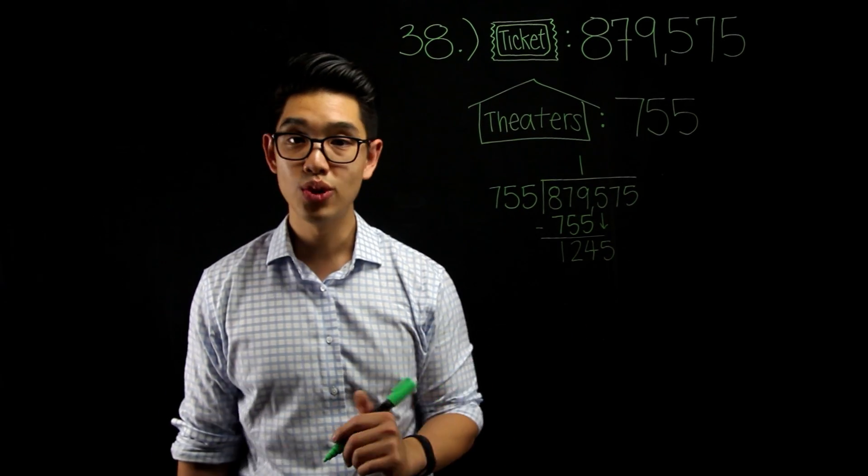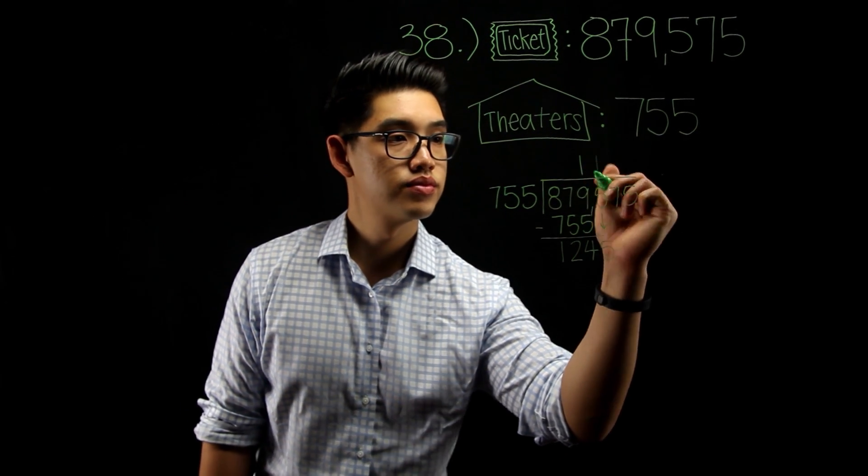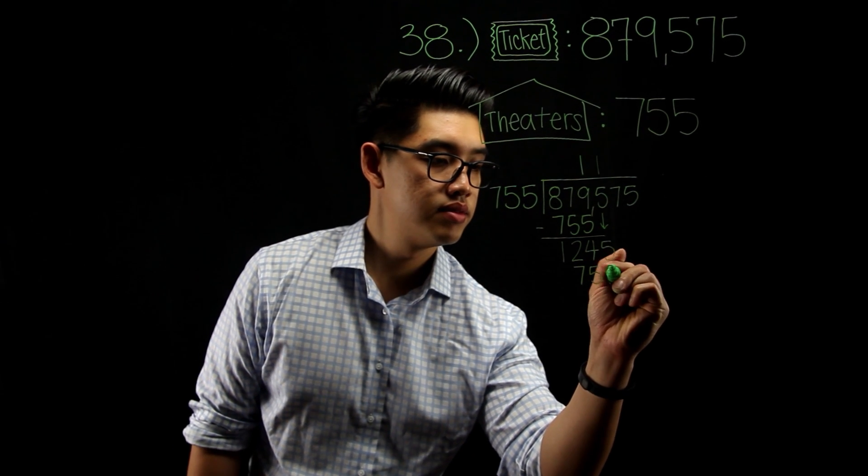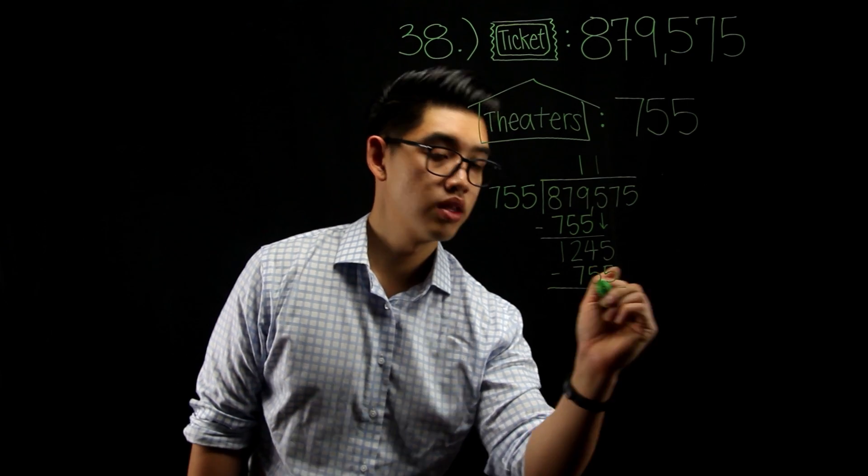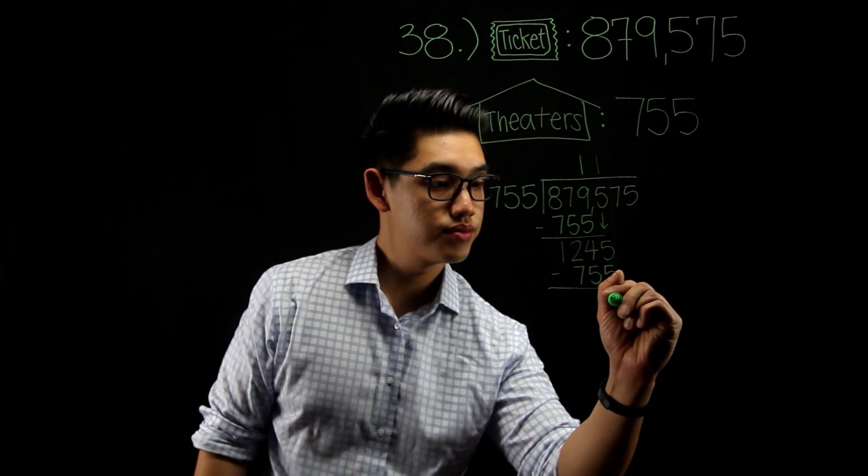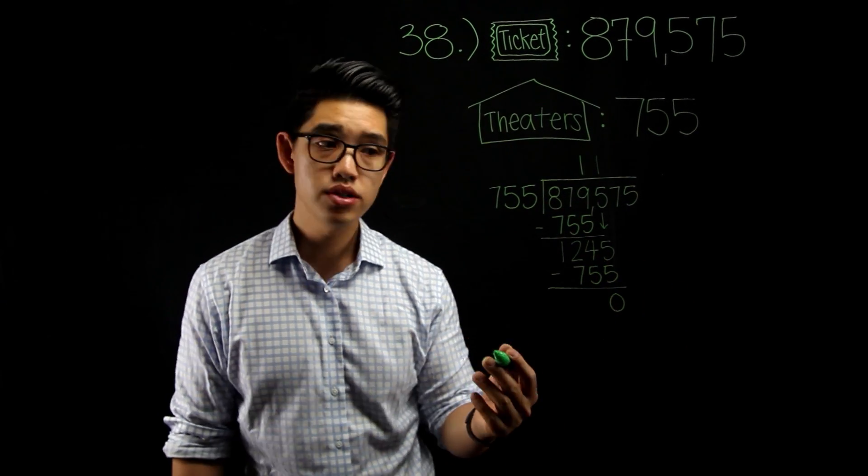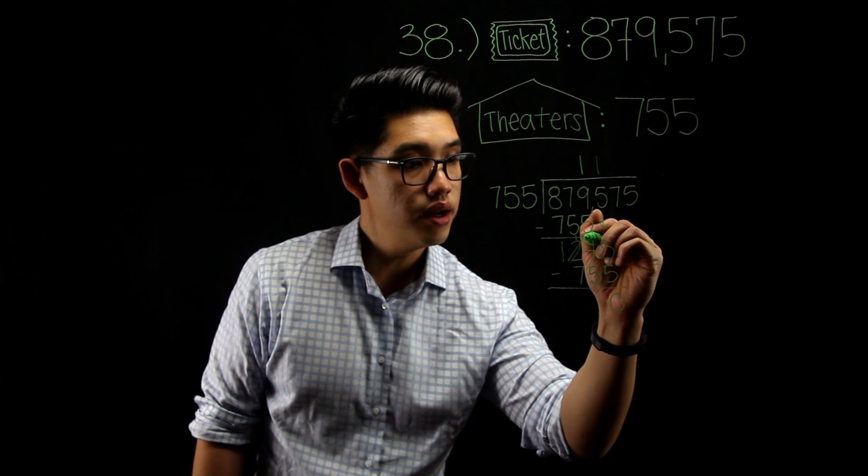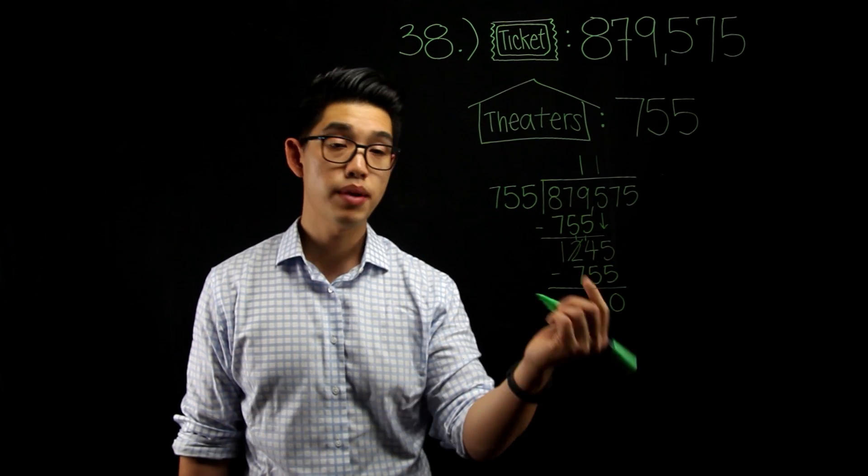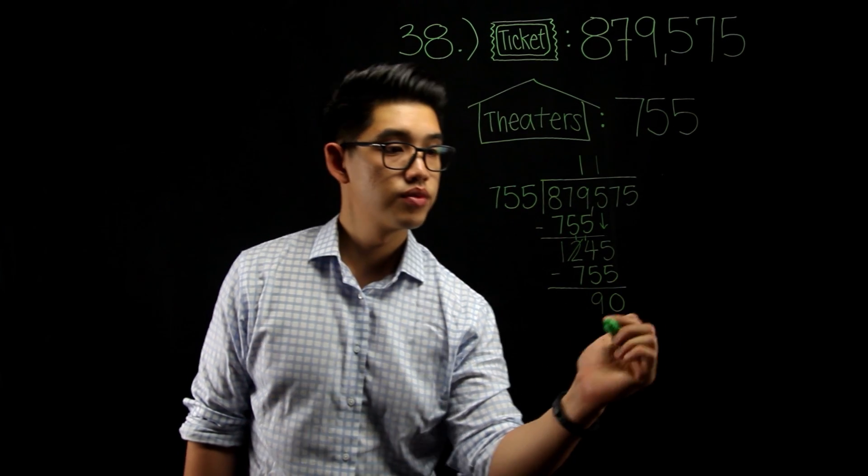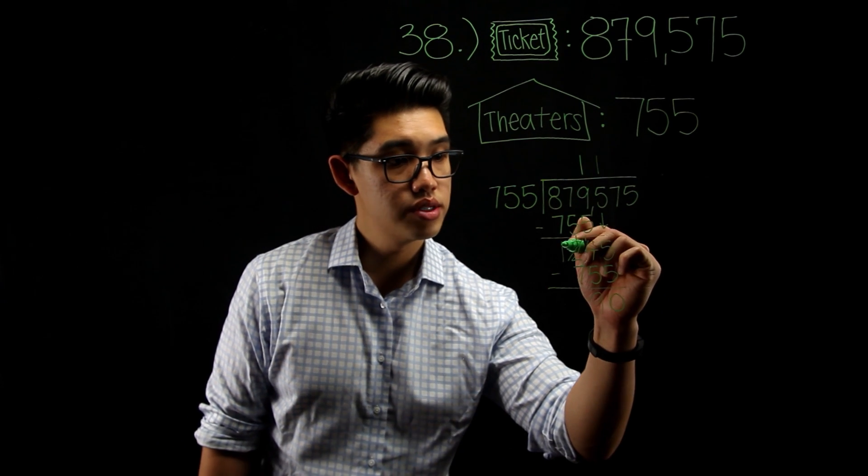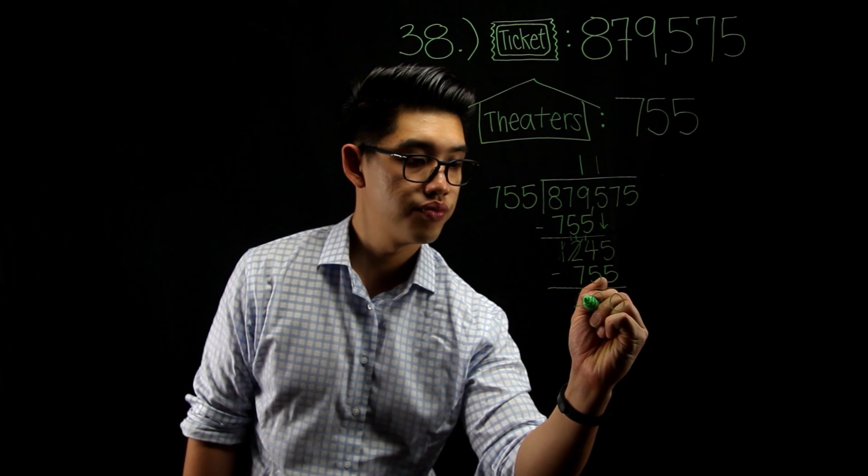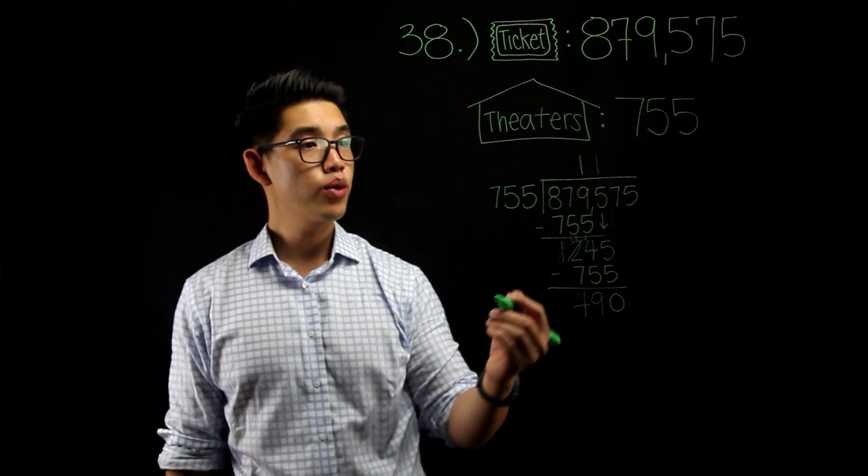755 goes into 1245 one time. 1 times 755, same thing, 755. We're going to subtract again. 5 minus 5 is 0. 4 minus 5, you can't do that. So, you're going to borrow a 1 from the 2, making that 14. 14 minus 5 is 9. 1 minus 7 can't do that either. So, you're going to borrow from the 1 here, make that into 11. 11 minus 7 equals to 4. Now, we're going to drop down to 7.